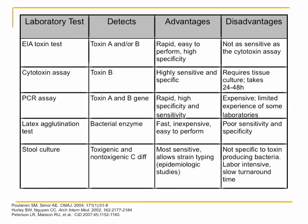The latex agglutination test detects a bacterial enzyme — it's fast and inexpensive but has poor sensitivity and specificity and is not widely used anymore. Stool culture is used more for epidemiologic purposes, such as isolating which strain is present during an outbreak.